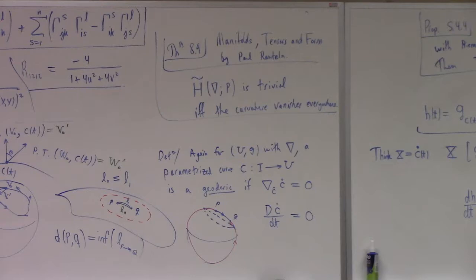And here's how he writes it. H-tilde, nabla, semicolon, P, is trivial. All right. I.e., it consists only of the identity element if and only if the curvature vanishes everywhere. Now, you might ask what this H-tilde is. That's the holonomy group.